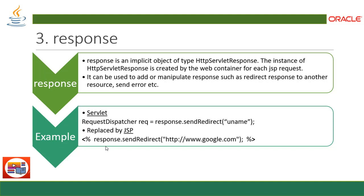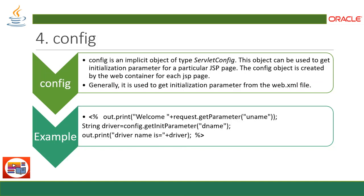`response` is an implicit object of type HttpServletResponse. The instance is created by the web container for each JSP request. It can be used to add or manipulate the response, such as redirecting the response to another resource using `sendRedirect`, or sending an error. The `sendRedirect` method of HttpServletResponse is directly available and used in JSP through this implicit object.